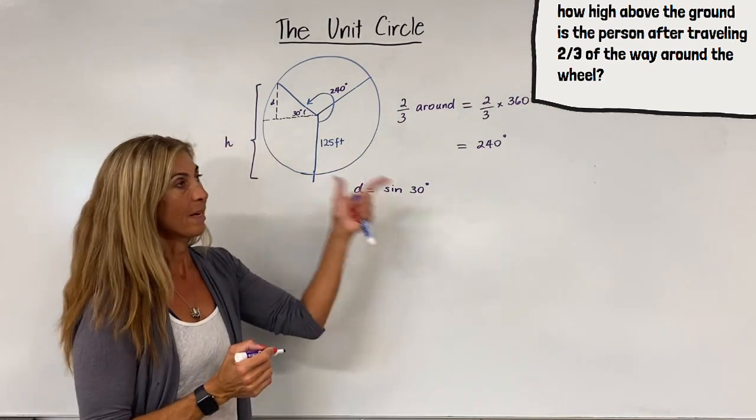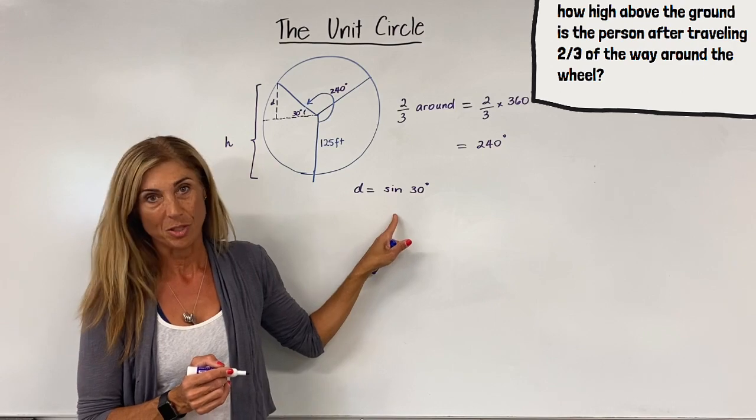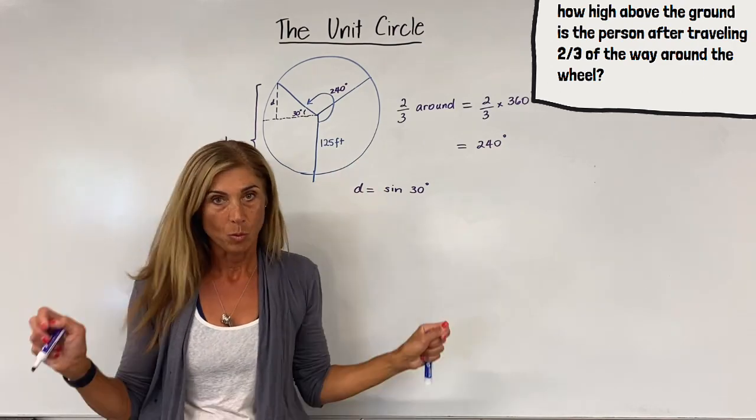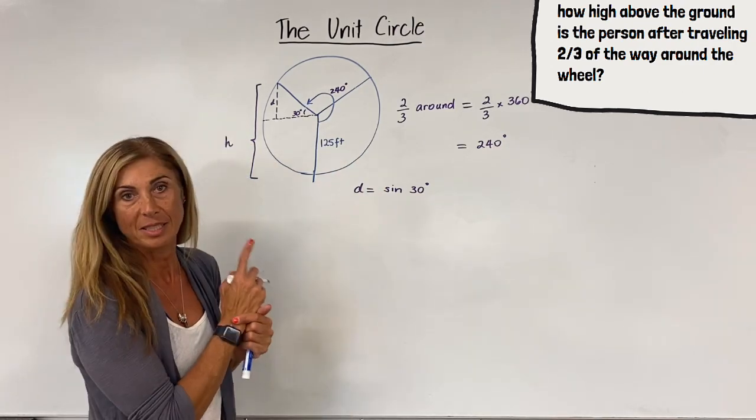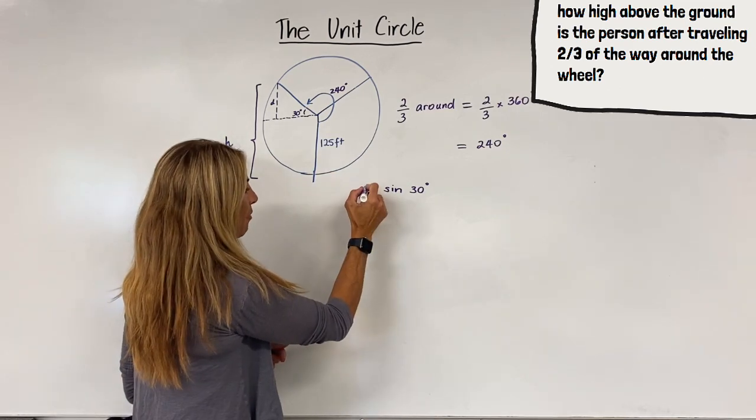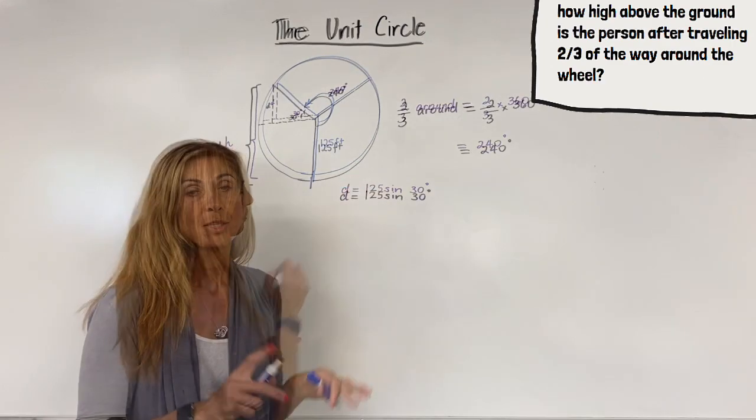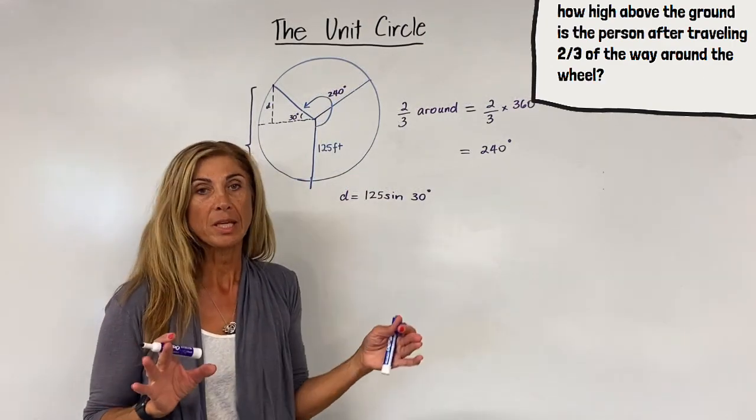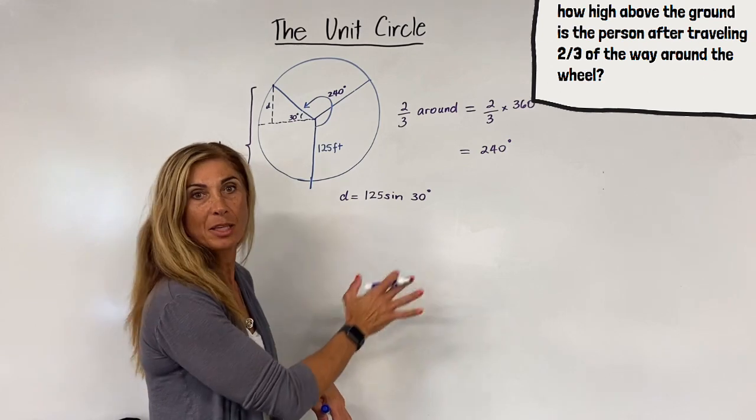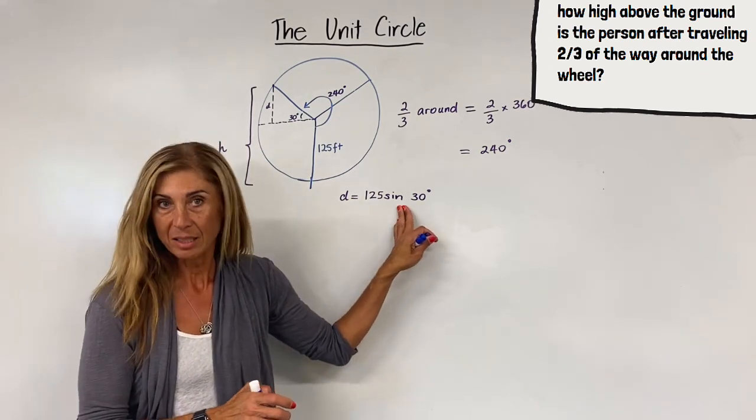Recall that the value that we are determining is based on a unit circle, meaning a radius of one. However, our particular situation has a radius of 125. So our value is actually 125 times larger. So even though we haven't fully investigated the sine and cosine function yet, that's coming up, we can rely on our calculator for now.